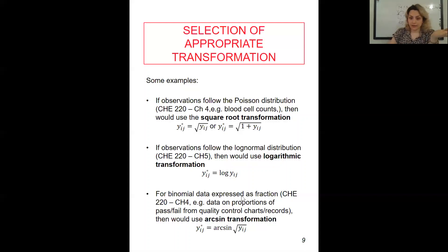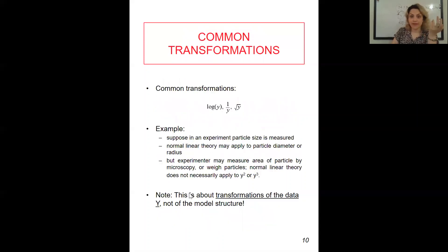For binomial data expressed as fraction, like data on proportion of pass-fail from quality control chart or the records that we would have, then we would use the arcsine transformation. It's the equation that we would use. Instead of y here, we would write down arcsine of the square root of y. That's just some examples. We can have many examples.